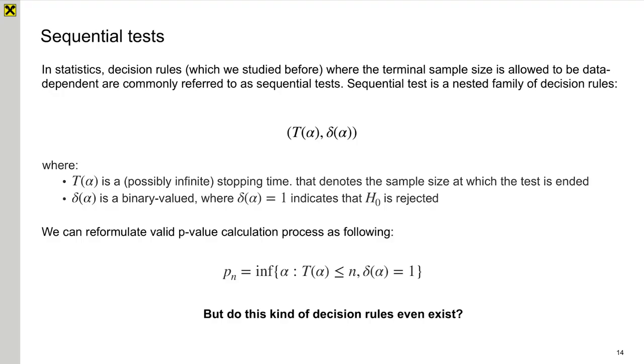Actually, sequential tests in statistics is a family of decision rules which tells us when to stop the test. The test and it parameterize by two things. The first one is t. It's the sample size when the test is ended. And the second one is delta, which is binary valued variable that takes value of 1 when null hypothesis is rejected and 0 otherwise.